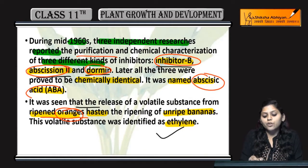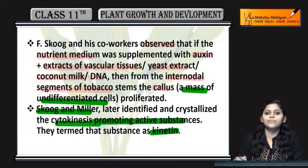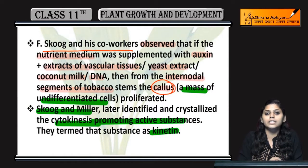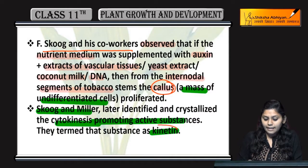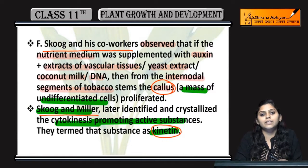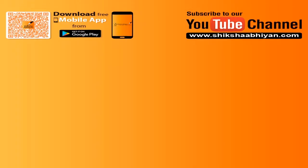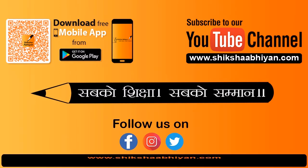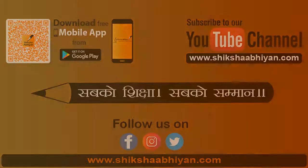Skoog and his co-workers ne dekha that oxins ki wajhe se callous ki proliferation ho rahi thi. Aur kinetin substance — jo cytokinesis ko promote karta tha — use Skoog and Miller ne discover kiya. Inhone is substance ko naam diya: kinetin.